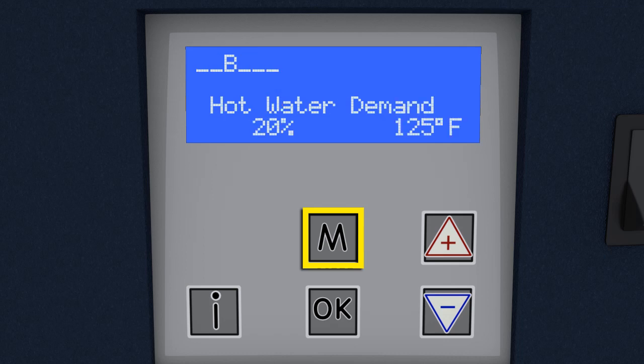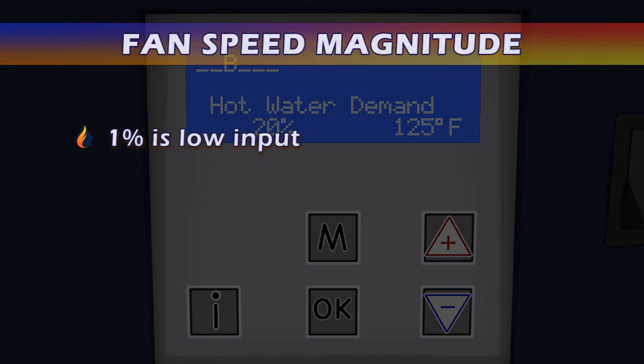The screen displays hot water demand if the set point was increased enough to start the ignition sequence. The percentage value displayed in the lower left corner of the screen is the magnitude of the fan speed. 1% is low input, 100% is high input.